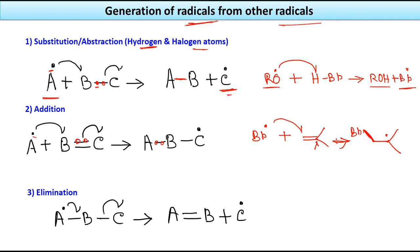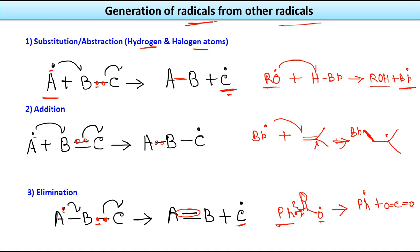The third method for generating radicals from other radicals is elimination. Starting from a radical, a bond between B and C is broken: the two electrons from the B–C bond form a new bond between A and B, and the single electron remains on C•. For example, PhCO–CO• undergoes elimination to give Ph• plus CO₂, where the C–C bond is broken and the phenyl group becomes the new radical.